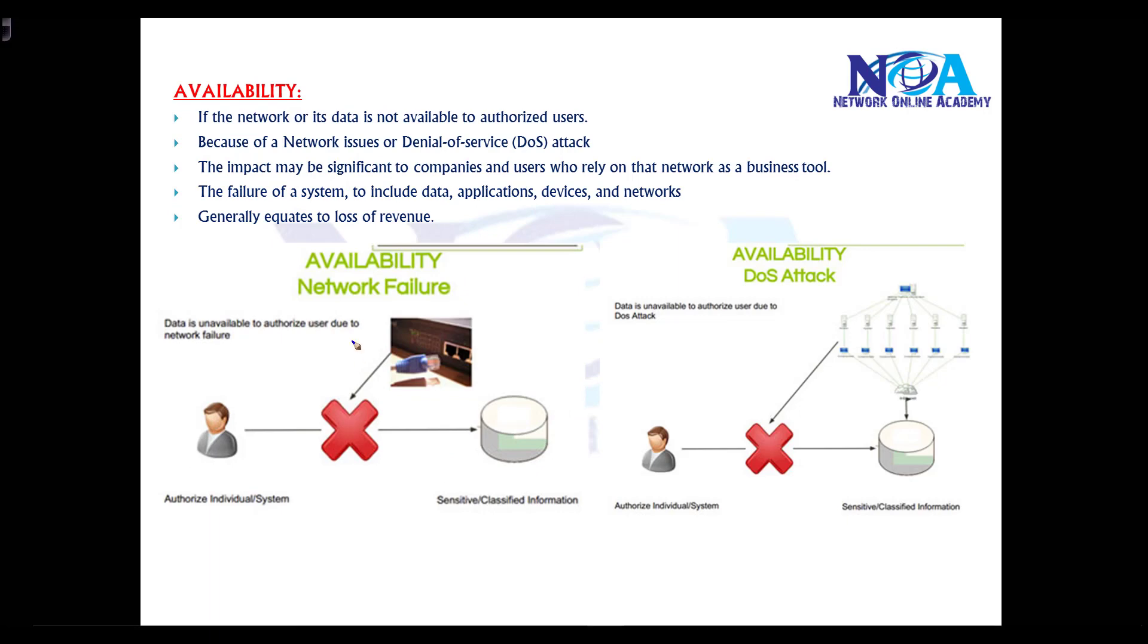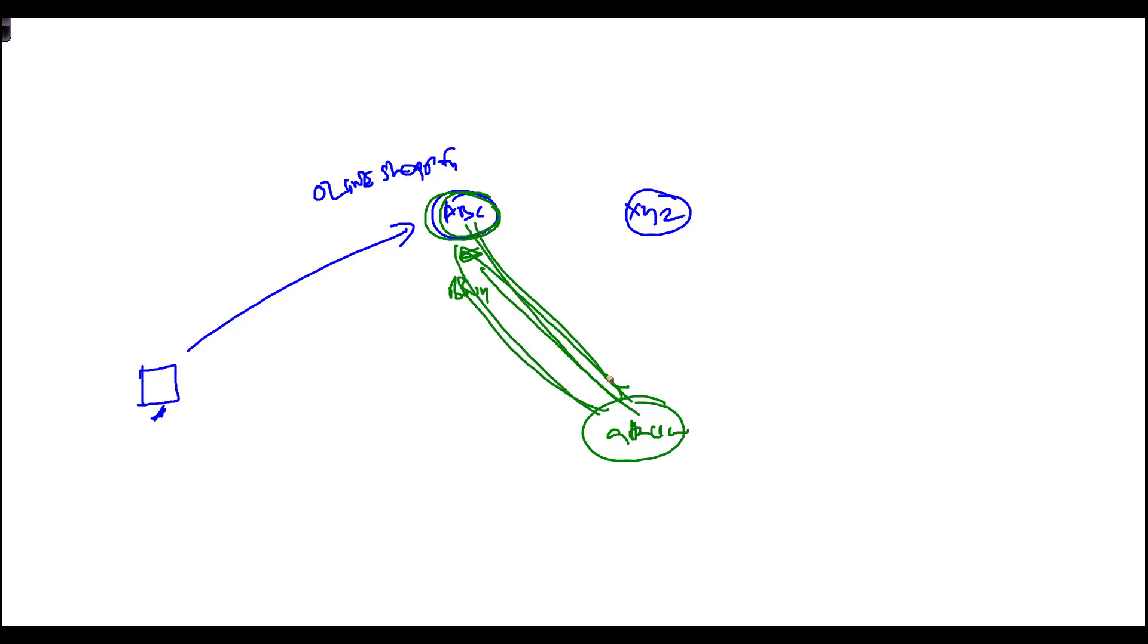The third option is availability. Availability means the network has to be available all the time. The most common attacks on the internet are DOS attacks - denial of service attacks - where the attacker's intention is to impact the performance of the network or server. For example, you do online shopping and there are two different vendors, ABC and XYZ. The attacker's intention is to make sure that this server is busy. Denial of service means the attacker sends continuous traffic to the website, which makes the server busy responding to those requests.